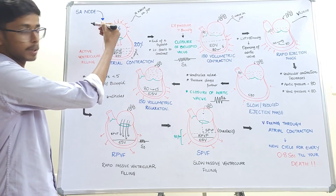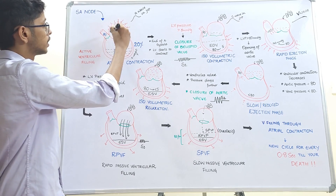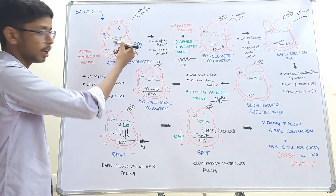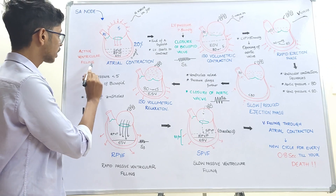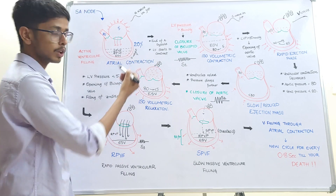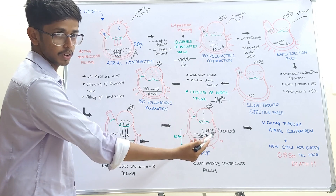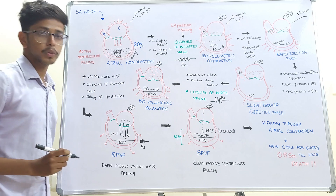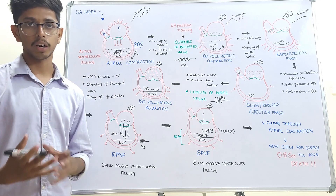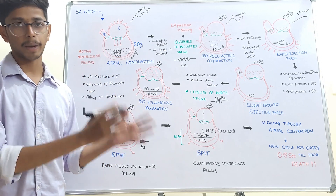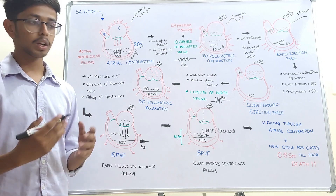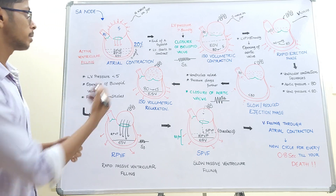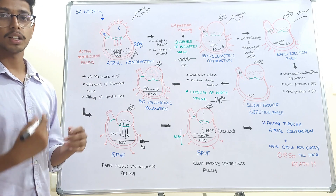When the SA node fires, it generates electrical impulses that transmit to the atria. When these impulses reach the atria, the atria start contracting, pumping blood from the atria to the ventricle — called active ventricular filling. This active ventricular filling comprises only 20% of total ventricular filling; the remaining 80% is due to passive transfer. This means atrial failure is not as significant as ventricular failure, since 80% is transferred passively. The 20% active filling becomes important when a person needs more cardiac output, such as during exercise.